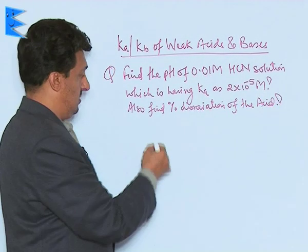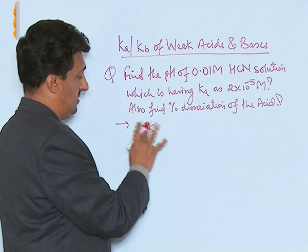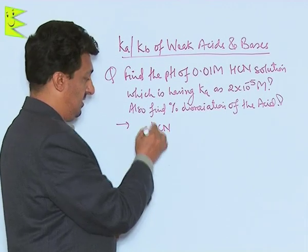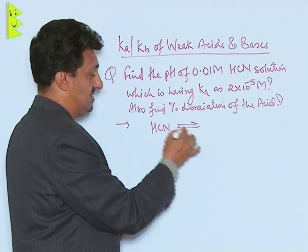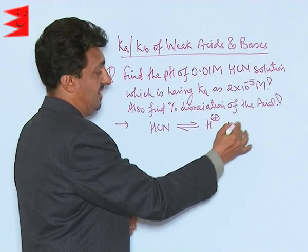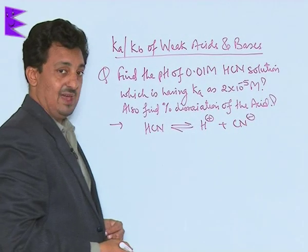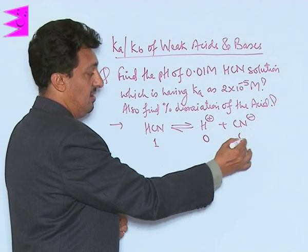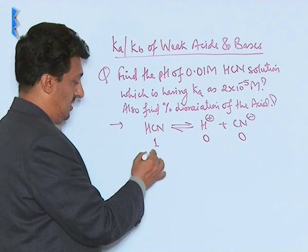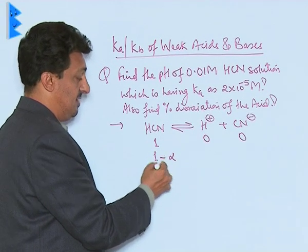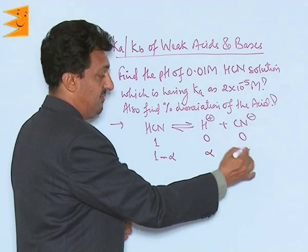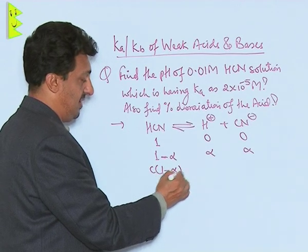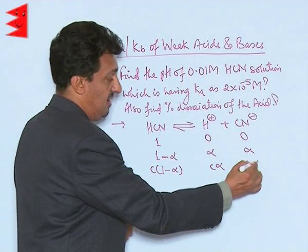We are given HCN — hydrogen cyanide — which is a weak acid, dissociating as H⁺ and CN⁻. Initially, if the concentration is 1 molar, the ion concentrations are 0. If alpha moles dissociate, then at equilibrium the concentrations are: HCN = C(1 − α), H⁺ = Cα, and CN⁻ = Cα.